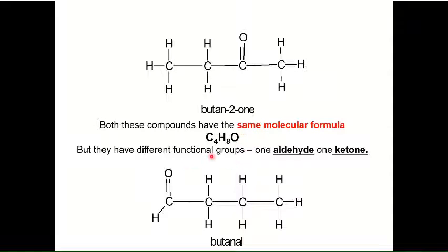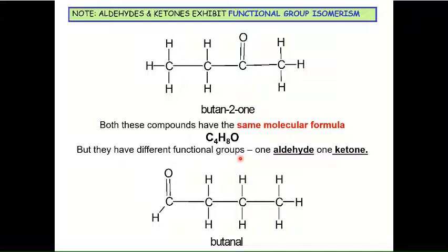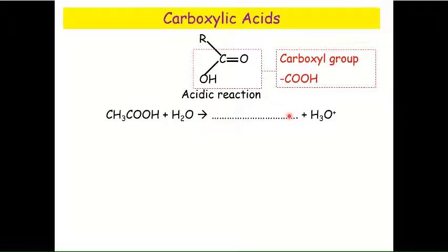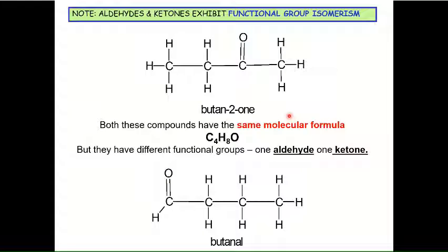All right, here's butan-2-one and butanal, so we have done them both on the same page. Here I've showed you the general formula - I'm just trying to make a point here. So this is C4H8O - they're both C4H8O: one, two, three, four, five, six, seven, eight. So these are functional group isomers.